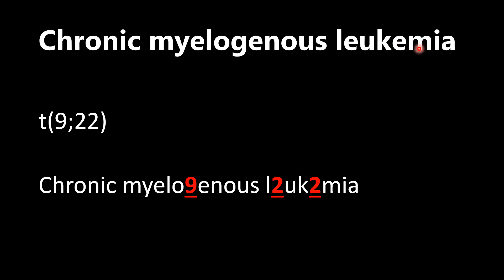Chronic myelogenous leukemia — remember, this is chromosomes 9 and 22. The way I incorporate it into the name: the 9 is going to be that 'G' in myelogenous if you can kind of see that, and then the 2s represent the E's in leukemia. So chronic myelogenous with the 9, leukemia with the 22 — chromosomes 9 and 22.